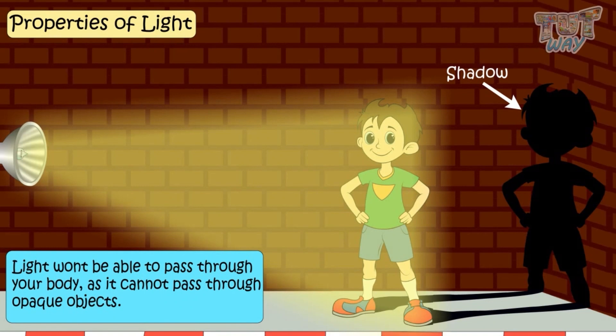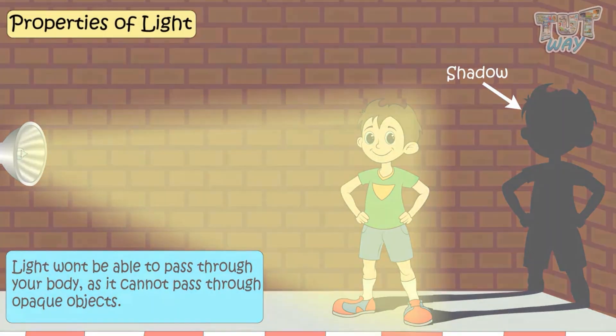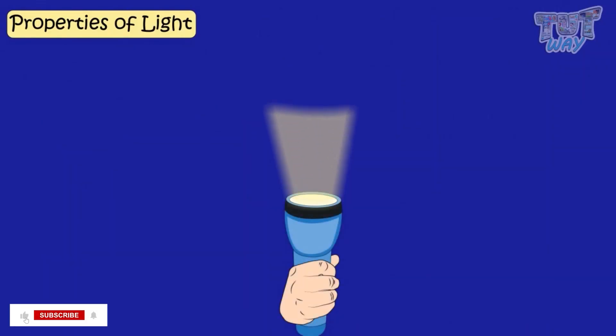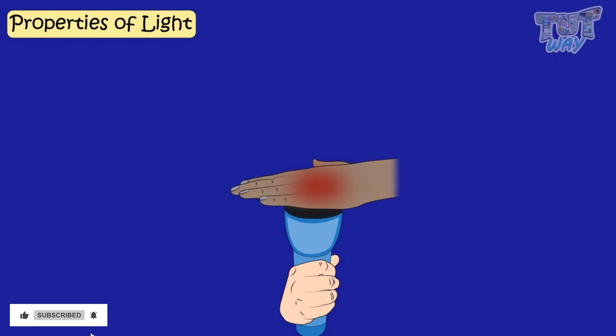Here is another example where you can show that light cannot pass through opaque objects. Take a torch, switch it on, and now put your hand over it. What happens to the light?